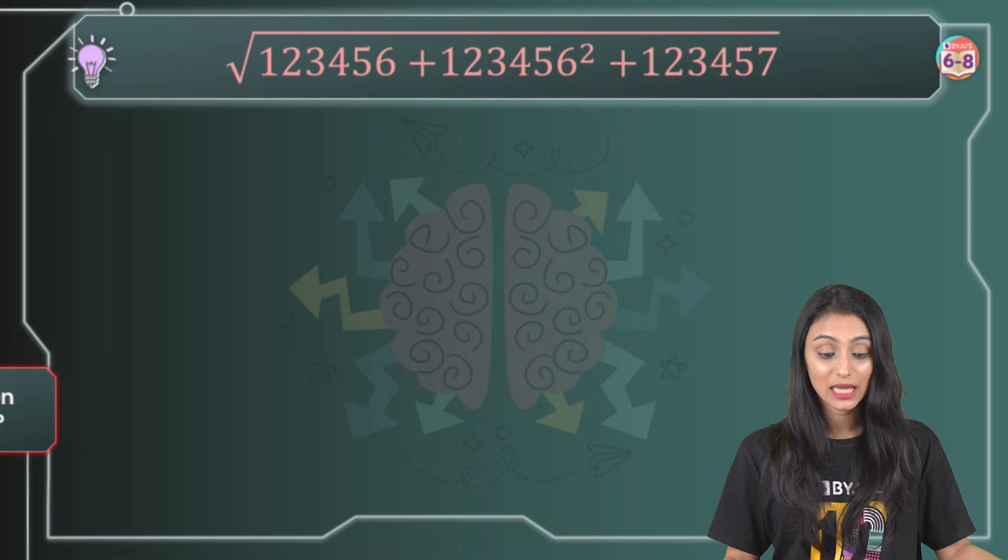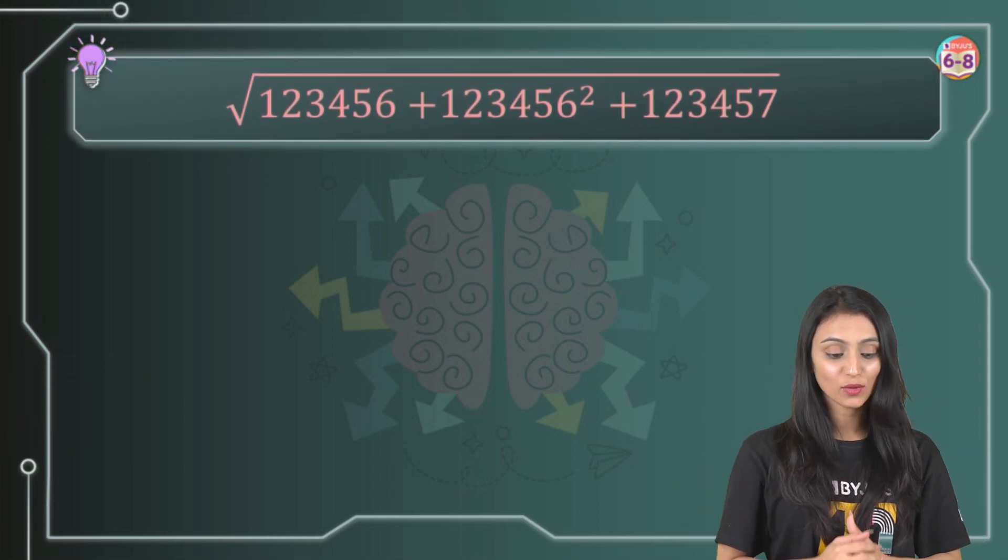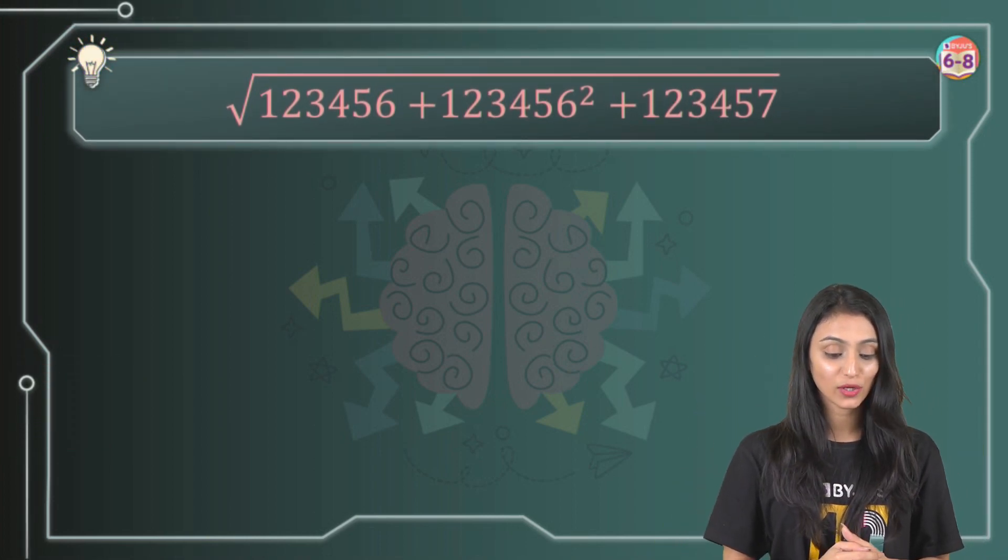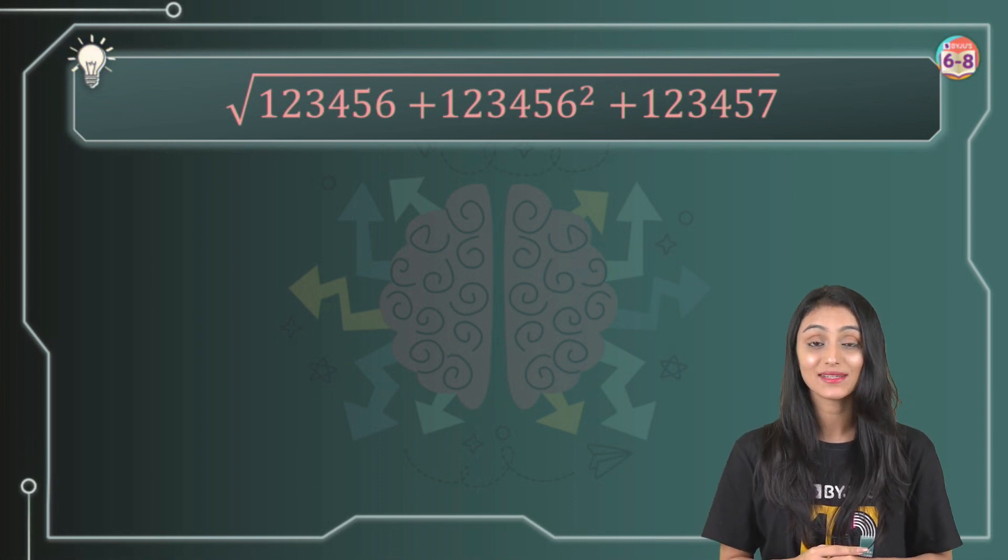So basically this question is, you can see over here, it's square root of 123456 plus 123456 whole square plus 123457.